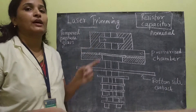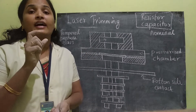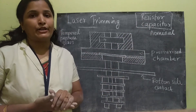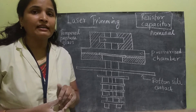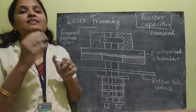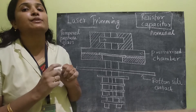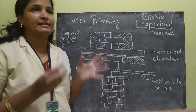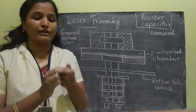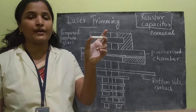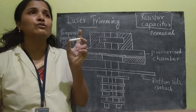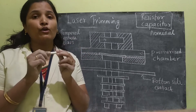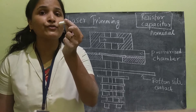Now let's see laser trimming. Laser trimming means controlled alteration of resistor or capacitor value. By using the laser, we are just trimming — the word trimming means we are just altering or modifying a little in order to achieve the required resistance or capacitance value. It works on the principle that if I consider this as a resistor having some resistance value and I want to increase the resistance value, I know that the resistance is related to the area of the material.